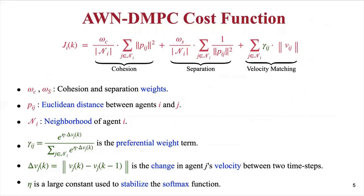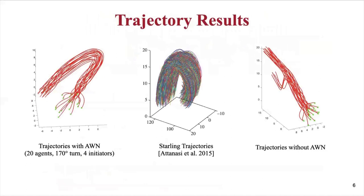Here is our AWN cost function. The first two terms, cohesion and separation, ensure the flocking formation, and the last term, which is the velocity matching, ensures flock maneuvering. Gamma is a softmax formulation, which gives the AWN weight, which is proportional to the change in the velocity of an agent. So for the initiators making the turn, their gammas are larger, causing their neighbors to prioritize velocity aligning with them. Here are the results showing some trajectories. The first is a successful flock turning achieved using AWN. The second is captured from real-life starling flocks making a turn. The last shows failure because AWN was not used, and after the initiator started the turn, the flock did not follow through, and you see a fragmentation.